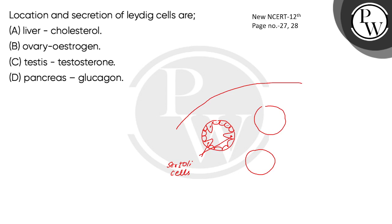The other cells are the male germ cells. This is one seminiferous tubule, this is the second, and this is the third.